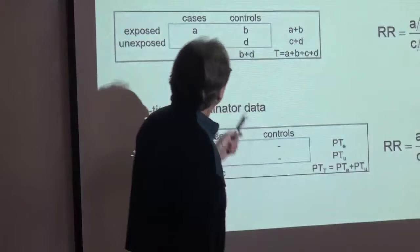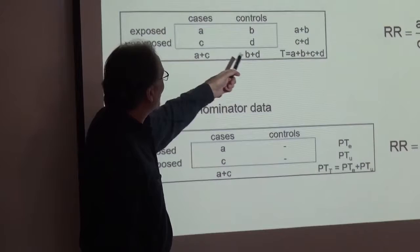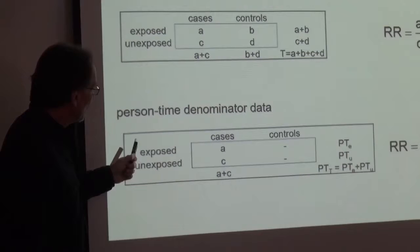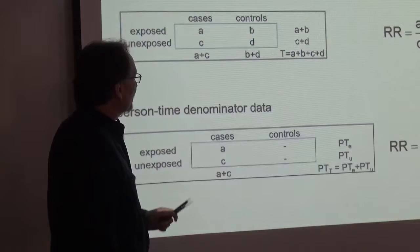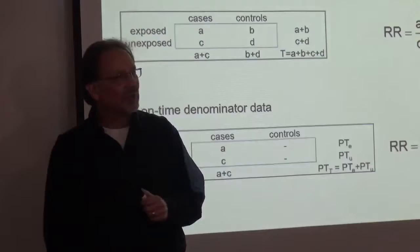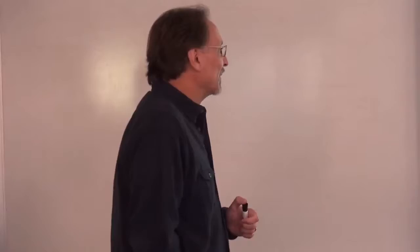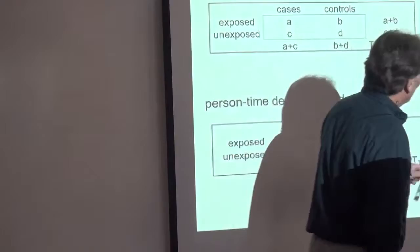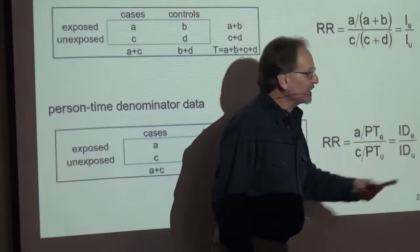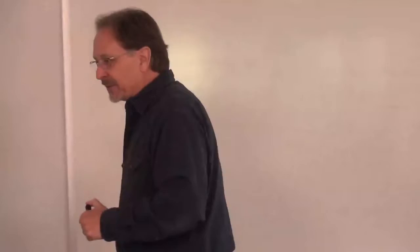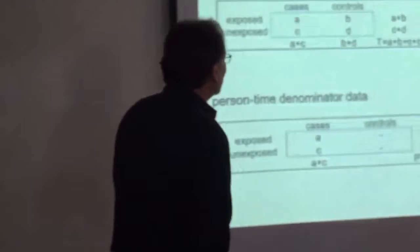The first type is what we've talked about already, where we have incidence among the exposed and unexposed — the number of cases exposed, the number of controls exposed, the number of cases unexposed, and the number of controls unexposed. However, we can also have an instance where we have only cases exposed and unexposed with no control data, but we do have person time of exposure and person time of unexposed. We can get incidence density for the exposed and incidence density for the unexposed.